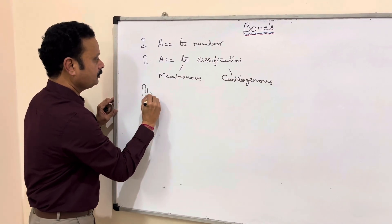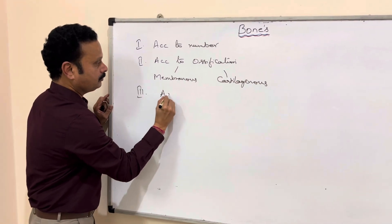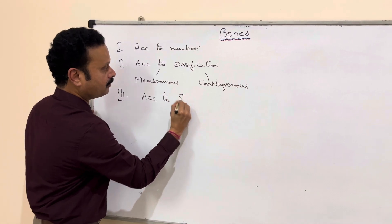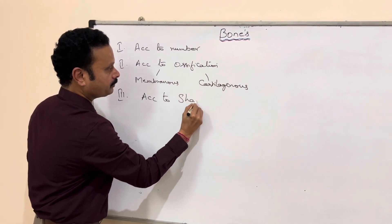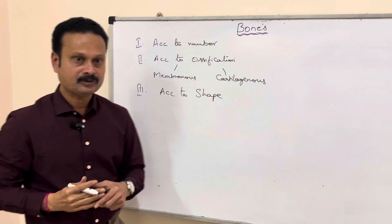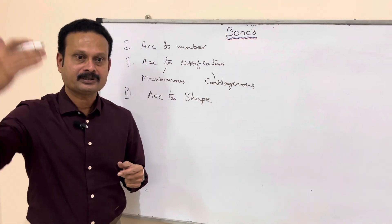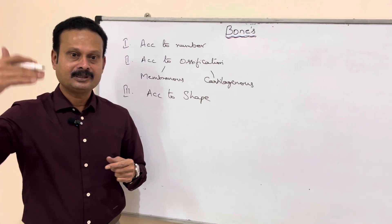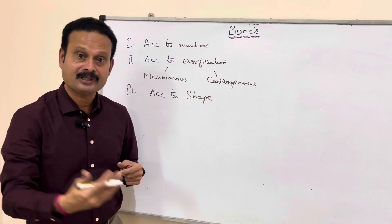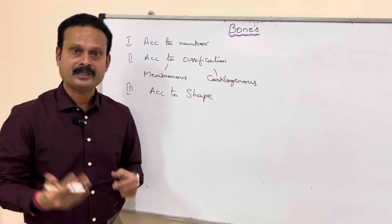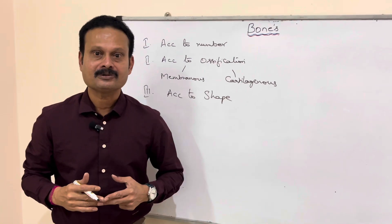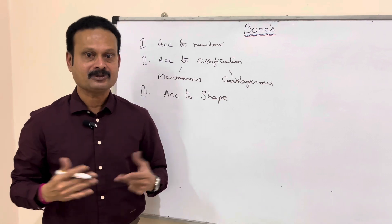Number three, which is important, is according to shape. According to the shape, there are numerous bones like long bones, short bones, flat bones, miniature long bones, modified long bones, pneumatic bones, sesamoid bones, irregular bones, accessory bones, etc.